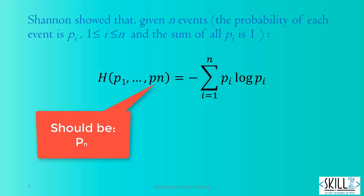Shannon showed that given n events, the probability of each event is p_i, where 1 ≤ i ≤ n and the sum of all p_i is 1, the amount of information in knowing which event happened is: H(p_1, ..., pn) = minus the sum of p_i log p_i. This is a very strange formula. Where does it come from?